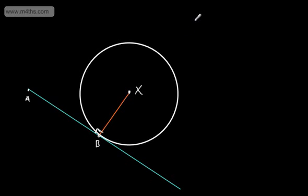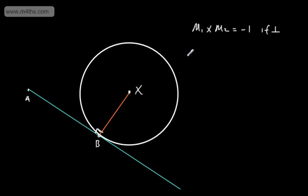So let's consider now the gradient of these two lines. We know if they're perpendicular, the product of their gradients will be equal to minus 1. So in general, we can say m1 multiplied by m2 will be equal to minus 1, if perpendicular. From that, we can say that the gradient of this line — mxb — multiplied by the gradient of the tangent, which is mab, will be equal to minus 1, as these are perpendicular.